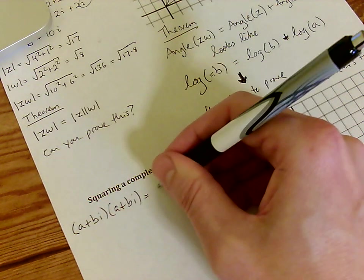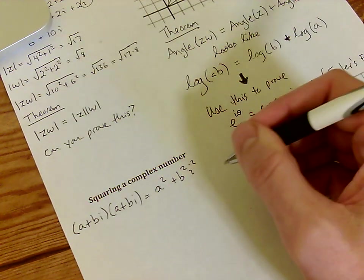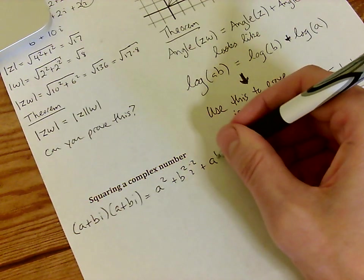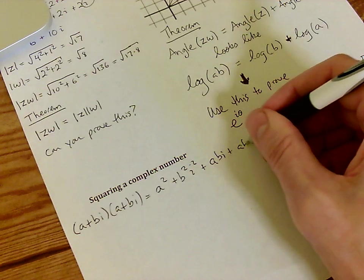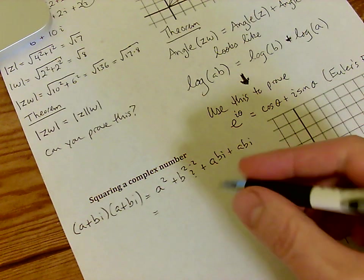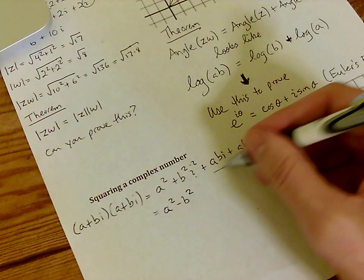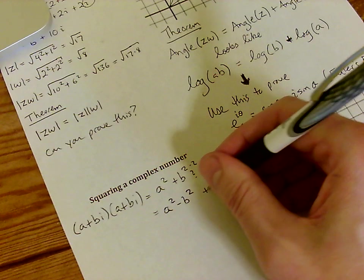Let's suppose I want to square the value a plus bi. Well, that's going to be a squared plus b squared i squared plus abi plus abi. Now, once again, since i squared is equal to negative 1, this simplifies to a squared minus b squared. And these combine like terms to 2abi.